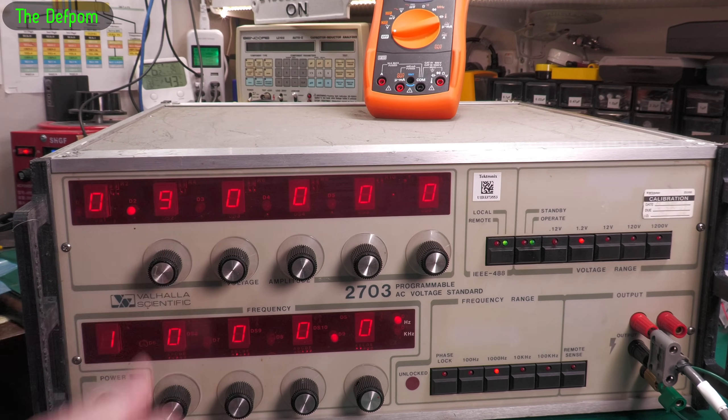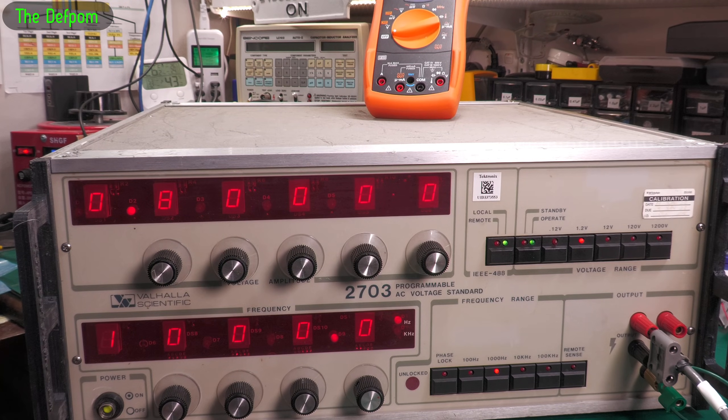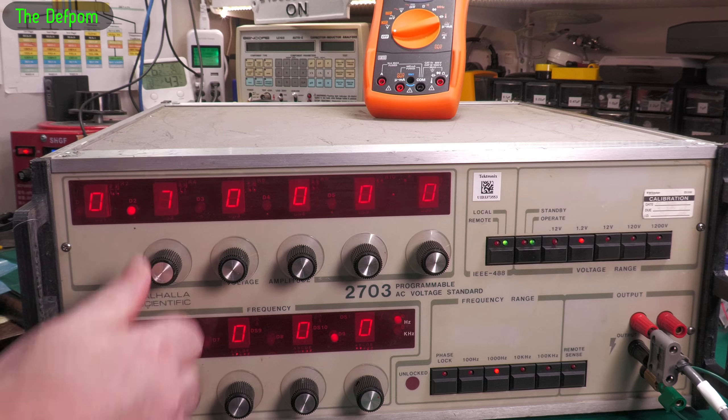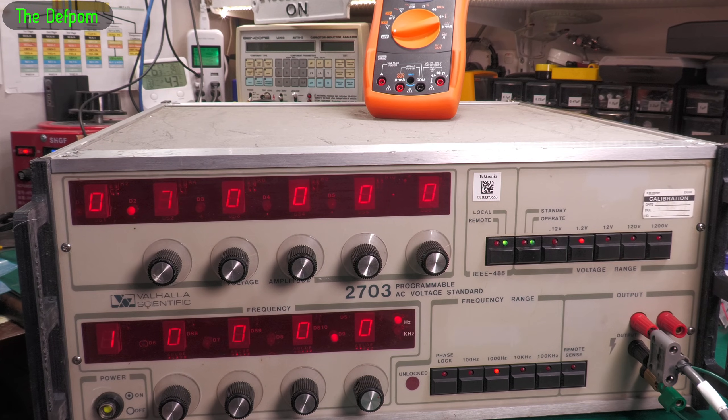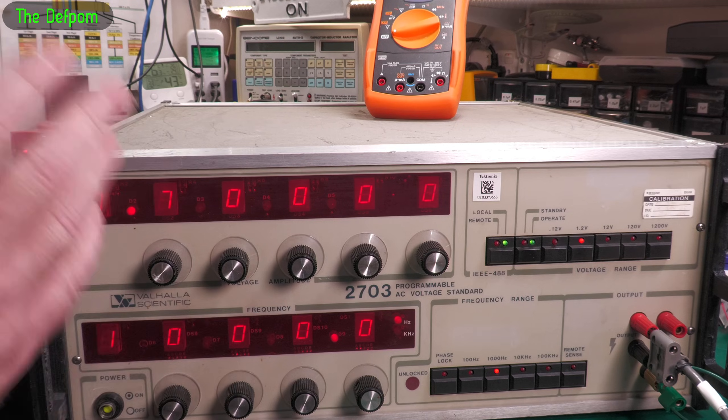But as soon as I went down to lower voltages, that was not right. I'm getting 750 millivolts or so right now, then 490 millivolts or so, then about 243. So this is completely out of whack.